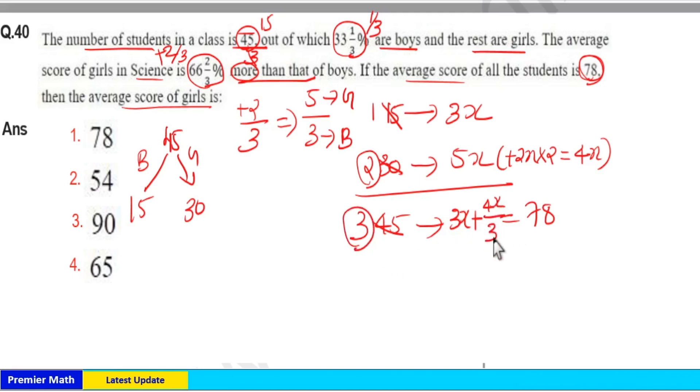So 3x plus 4x/3 equals total average 78, which means 3×3 is 9, 9+4 is 13. So 13x/3 is 78, means 13 goes 6 times in 78, which means x equals 6×3 is 18.